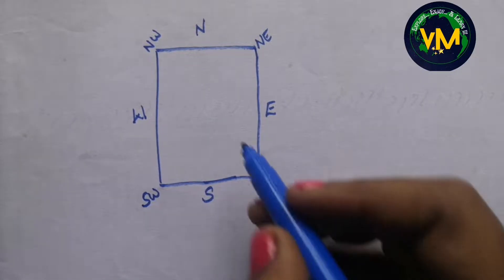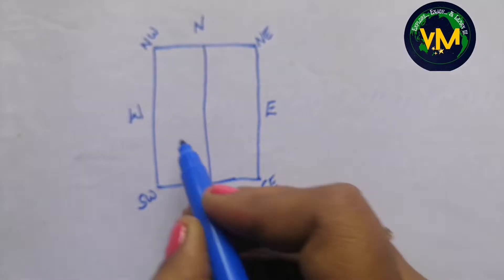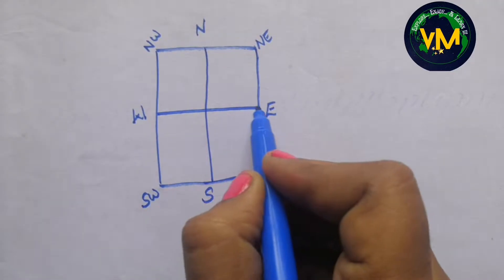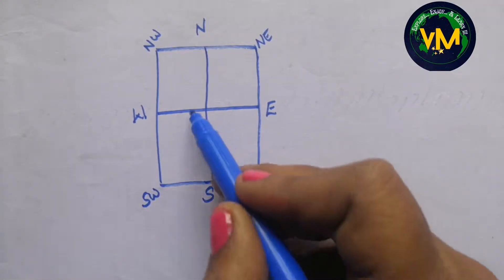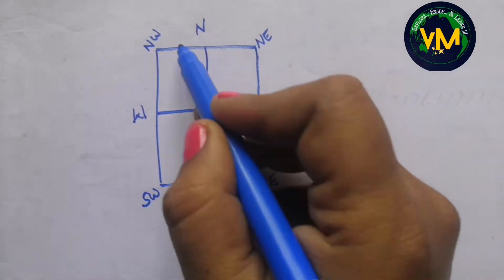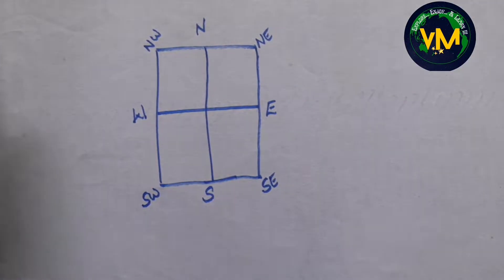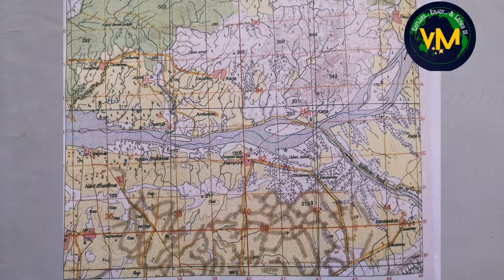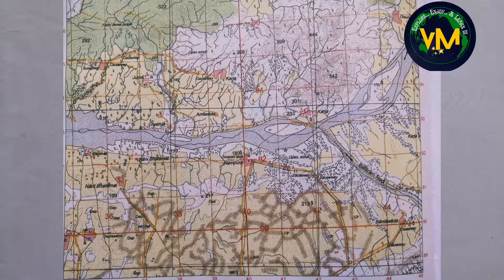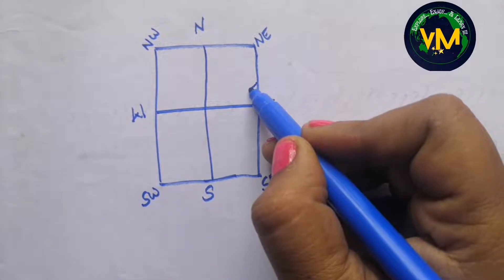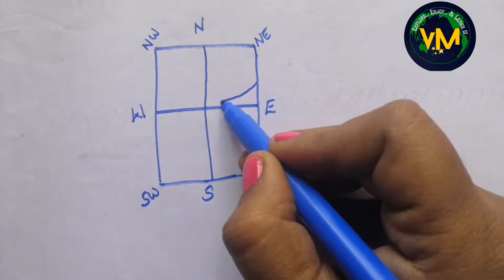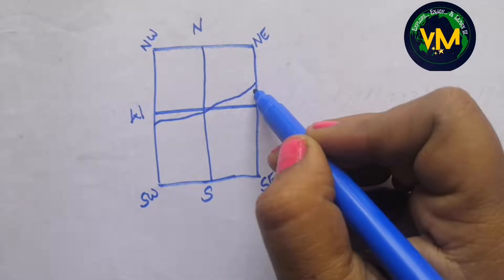Now step 2, I am dividing this into 4 quadrants: this will be northeast, southeast, southwest and northwest. Now step 3, I am going to draw the river exactly as it is given in the map. So Banas river is coming like this.